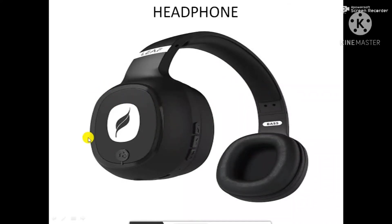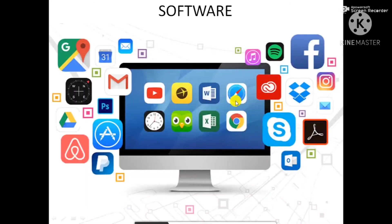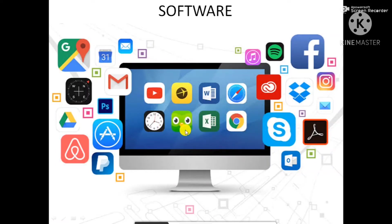Now let us see about software. Hope you have understood the input, process, and output devices. All the programs, files, games, songs, movies, pictures, etc. that we have on the computer are called software. These are not physical parts of the computer. Some examples of software are calculator, Gmail, MS Paint, Pinball game, WordPad, Facebook, and Maps.